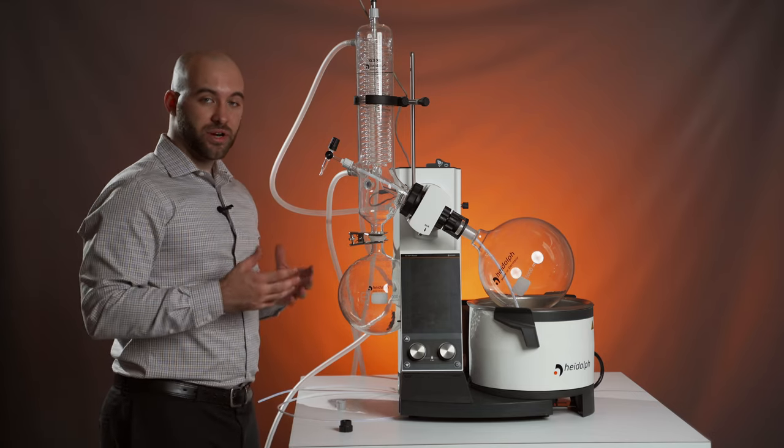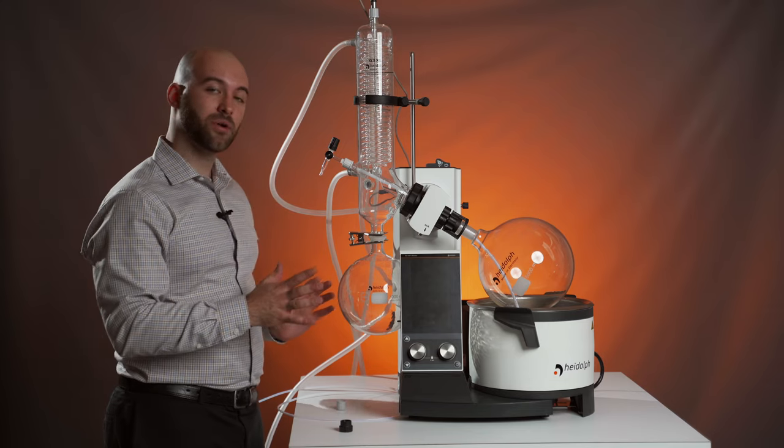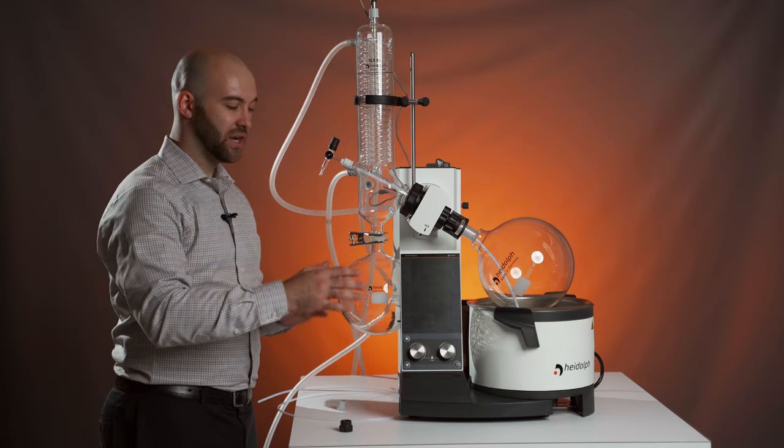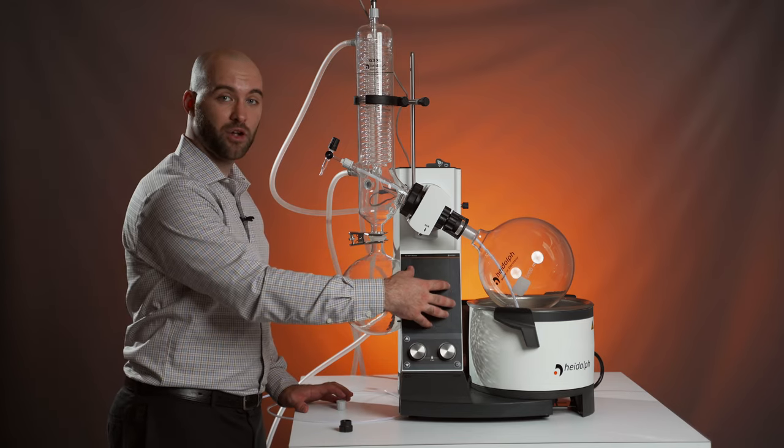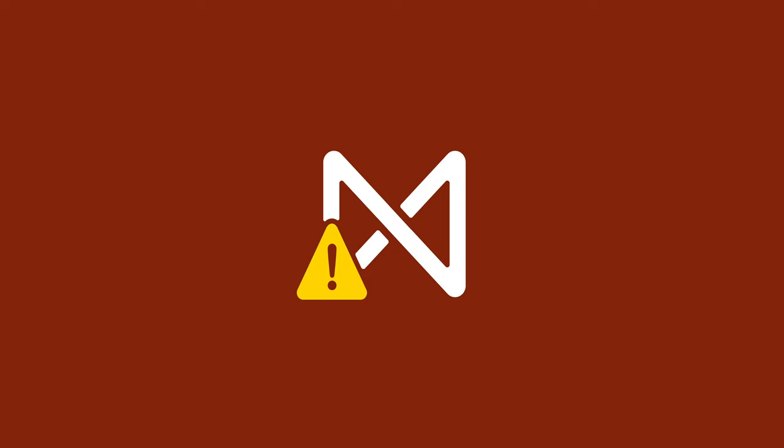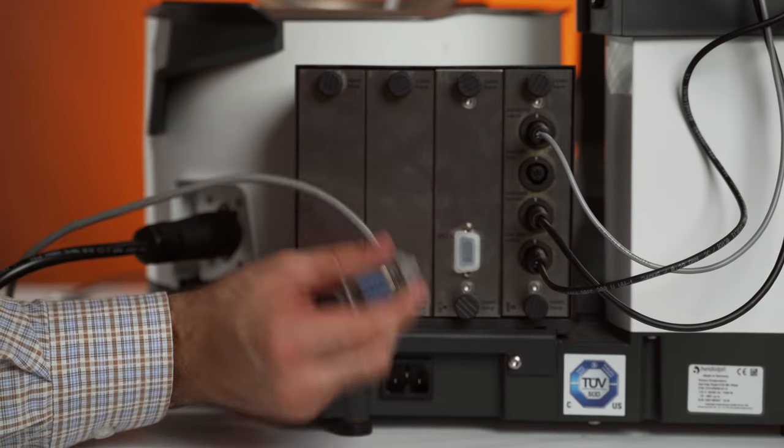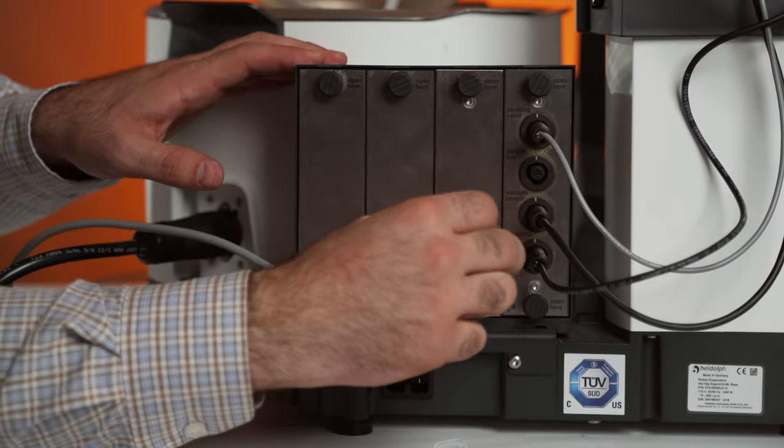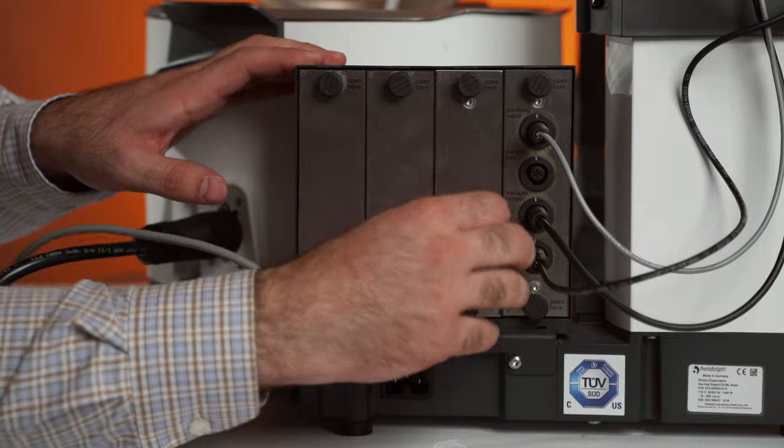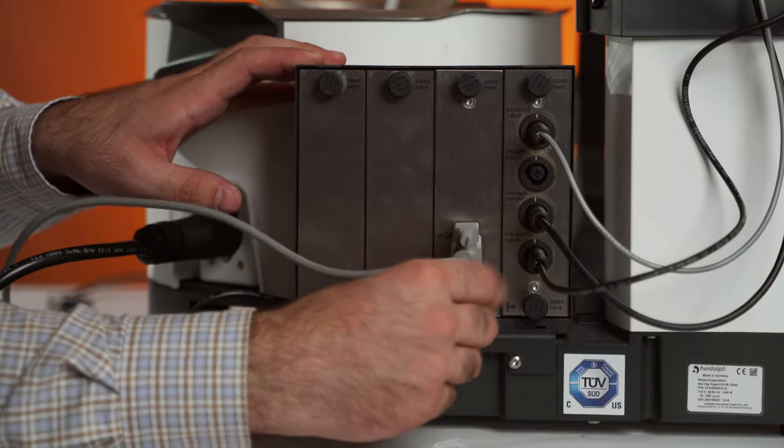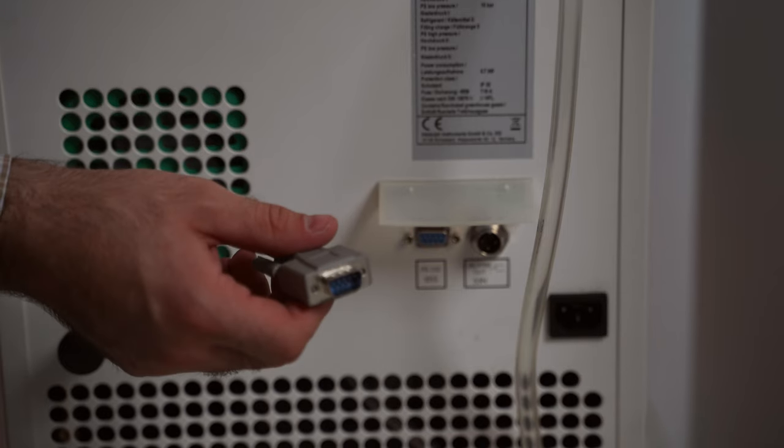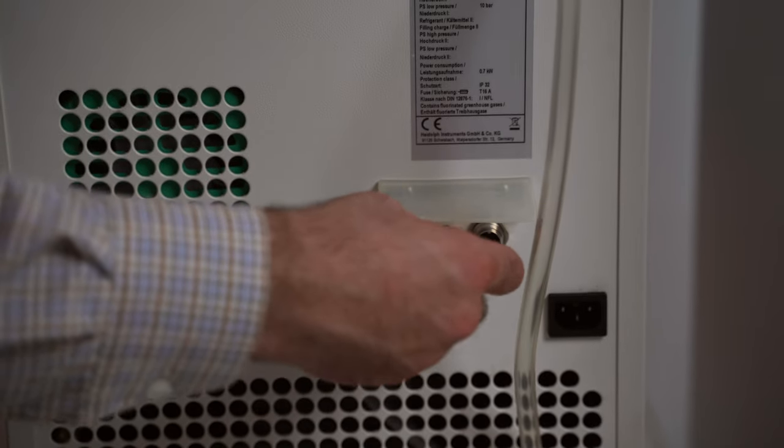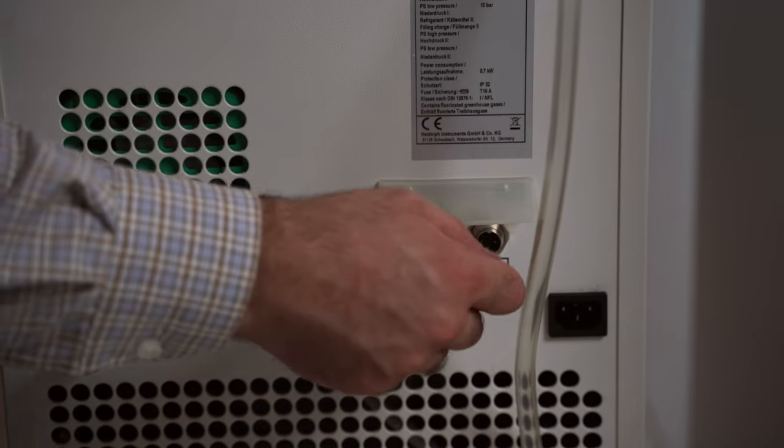Lastly, the third accessory that is commonly used with the rotary evaporators is an RS232 cable that will connect your HiVap to your chiller so you can operate your chiller's cooling parameters from your HiVap ultimate panel. First, we're going to connect our RS232 cable to the control box right here and clamp it down with the screws. The other end of your RS232 cable will connect to the back of the chiller right here and screw in as well.